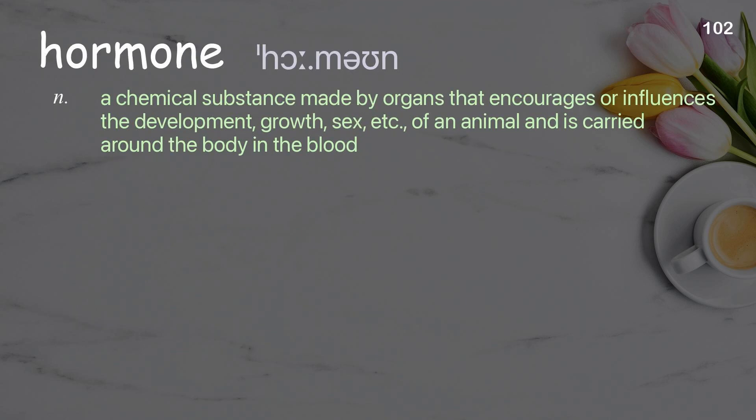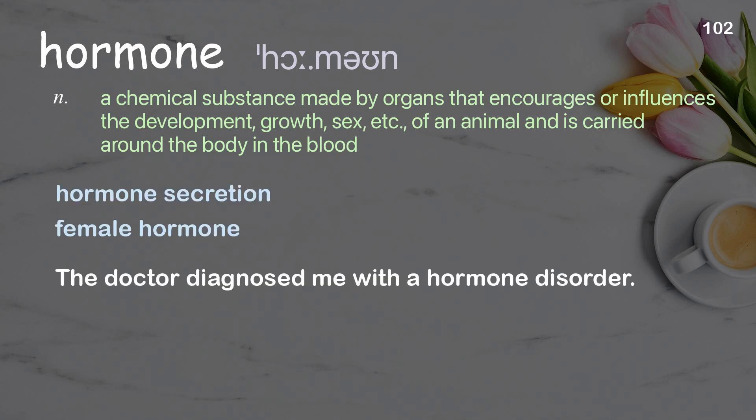Hormone: A chemical substance made by organs that encourages or influences the development, growth, sex, etc. of an animal and is carried around the body in the blood. Examples: Hormone secretion. Female hormone. The doctor diagnosed me with a hormone disorder.